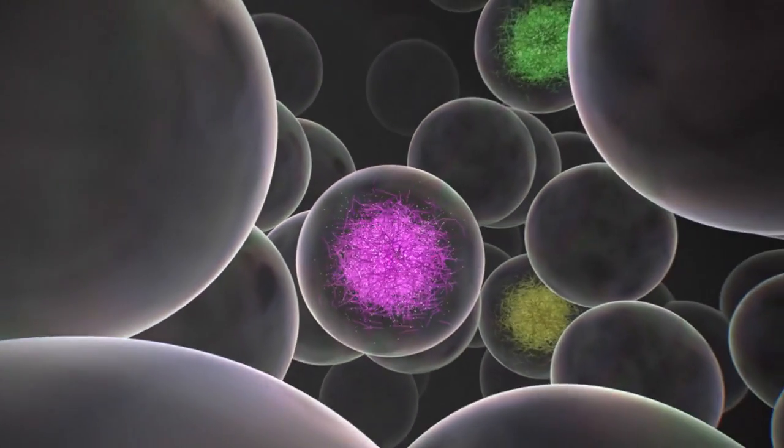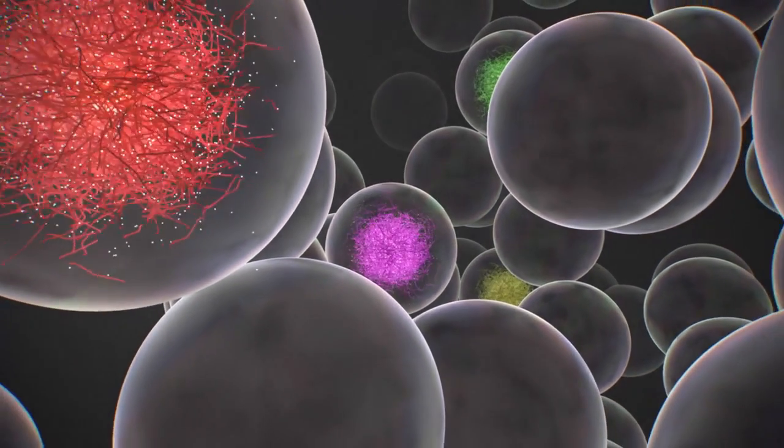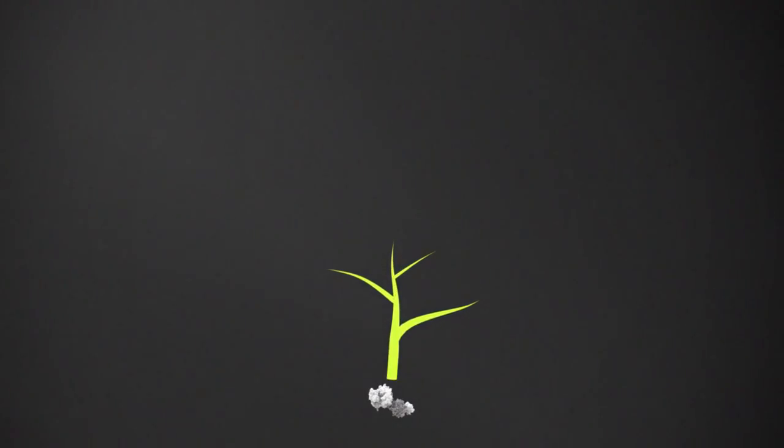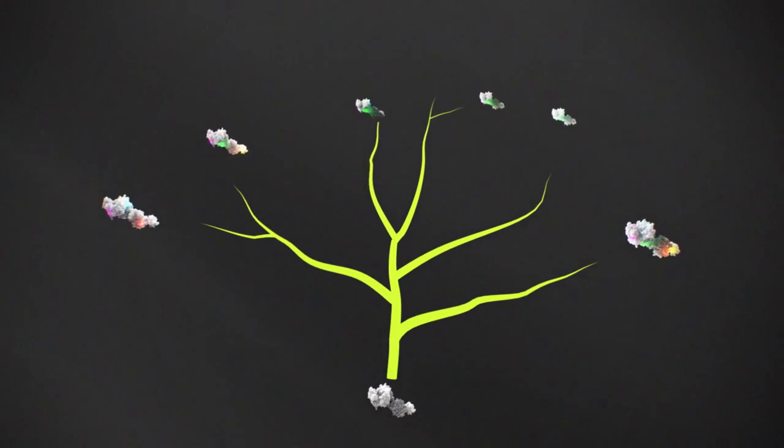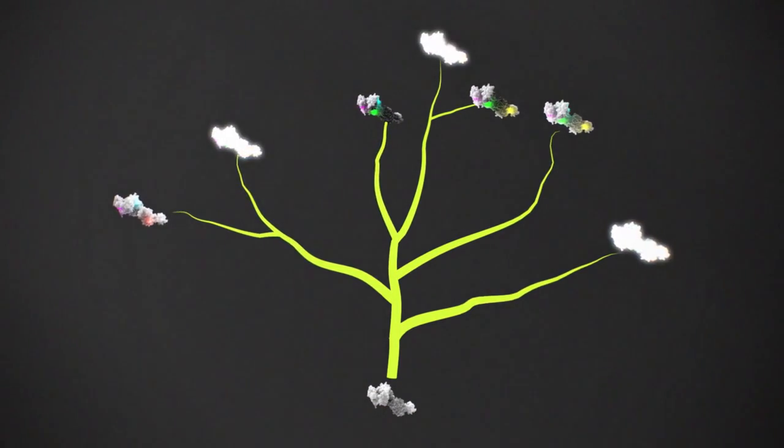The genes coding for the enzymes that survive the selection pressure are enriched and sorted into families based on genotype. This process of mutation and selection is repeated until the desired enzyme function has evolved.